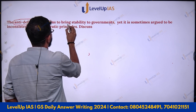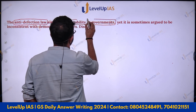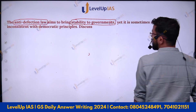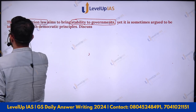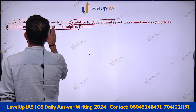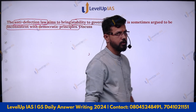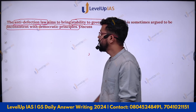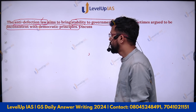The question has two parts. The first part is how anti-defection law aims to bring stability to the government. The second part is how it is argued to be inconsistent with democratic principles. The question is very straightforward — first we have to write about the anti-defection law.